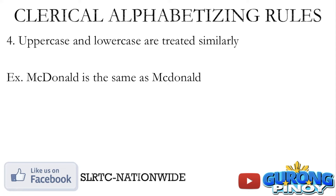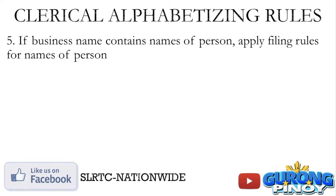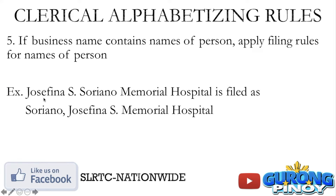Rule number five: if a business name contains names of persons, apply filing rules for names of persons. For example, Josefina S. Soriano Memorial Hospital — meron tayong pangalan ng tao dito — so this is filed as Soriano, Josefina S., Memorial Hospital. Nauuna pa rin yung last name, followed by the first name, middle initial, then Memorial Hospital. So that's Soriano, Josefina S. Memorial Hospital.